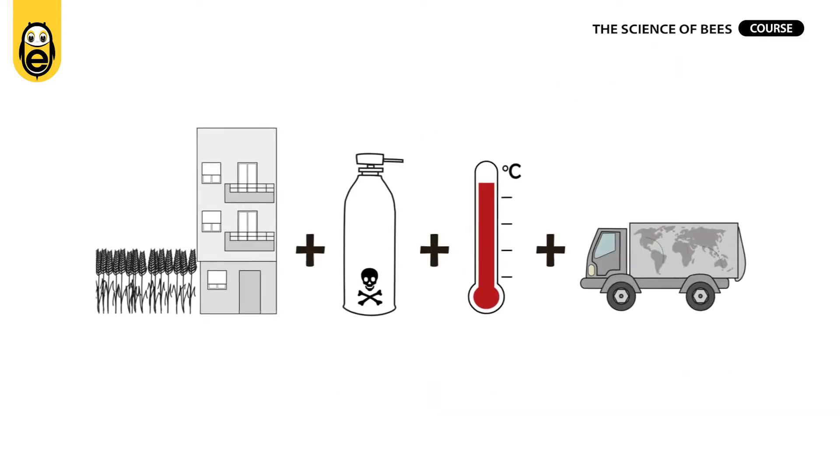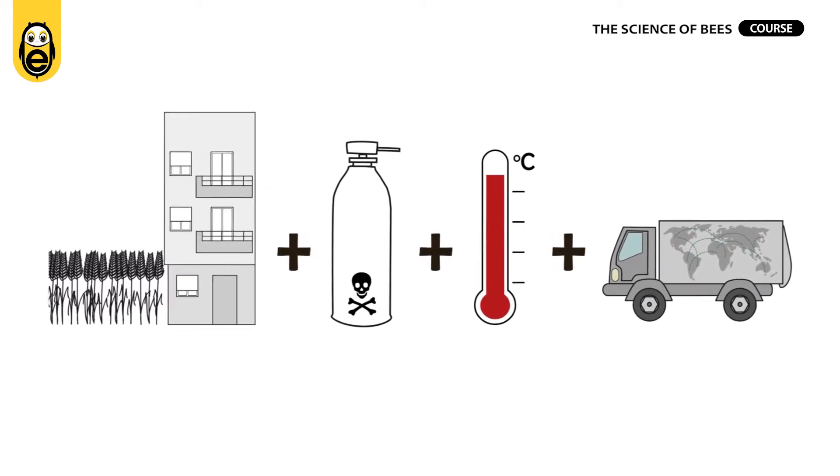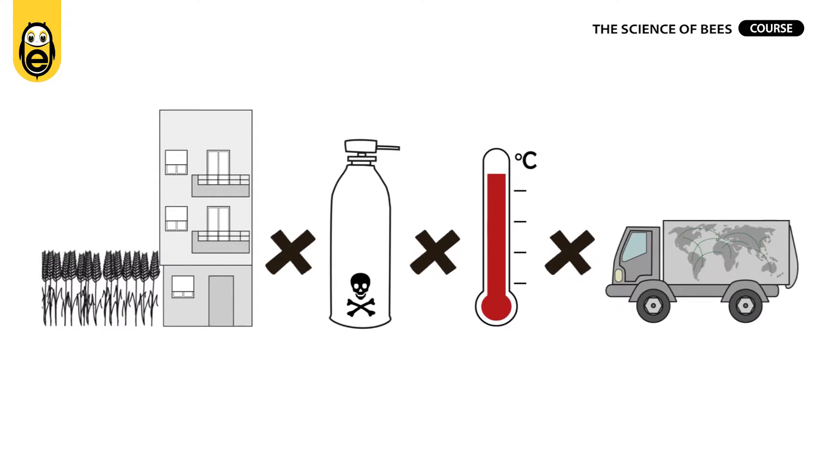We know that each of these things is causing some bee species to disappear. But when they happen simultaneously, the extinctions may multiply.